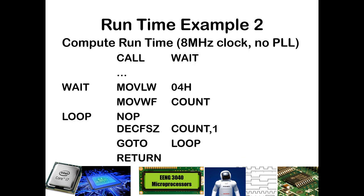Continuing to our next example — computing the runtime again, no PLL, calling await. In this case we are now adding a NOP inside of the loop. Our call, once again, is executed once with two cycles. Then we load the W register with 4 — that executes once for one cycle. We move that to count, once for one cycle. Then the NOP happens every time we go through the loop, which is four times, and it is a one cycle command.